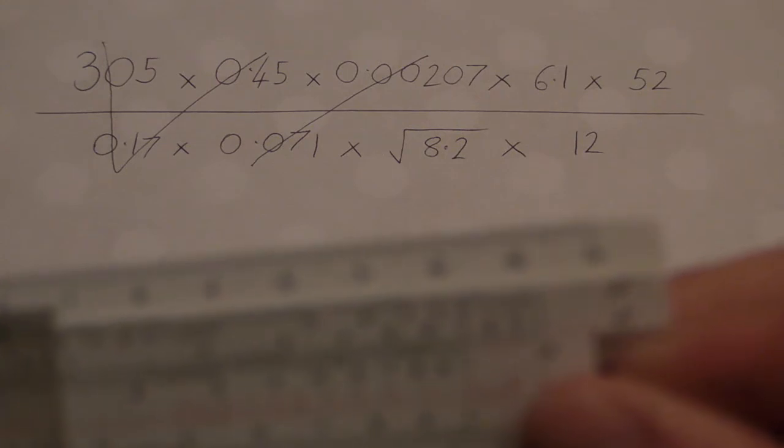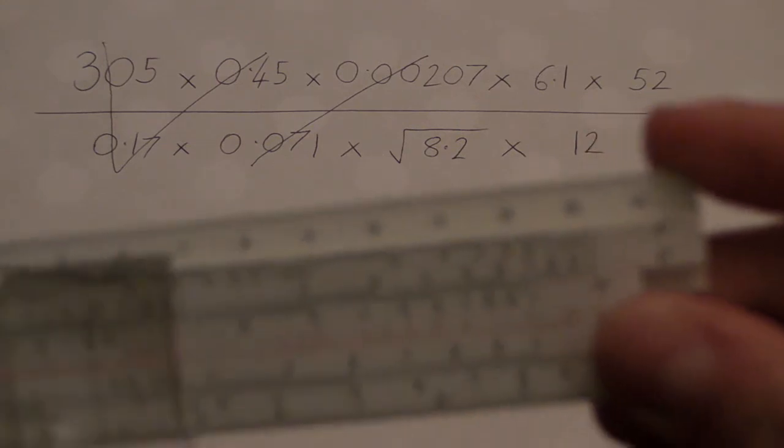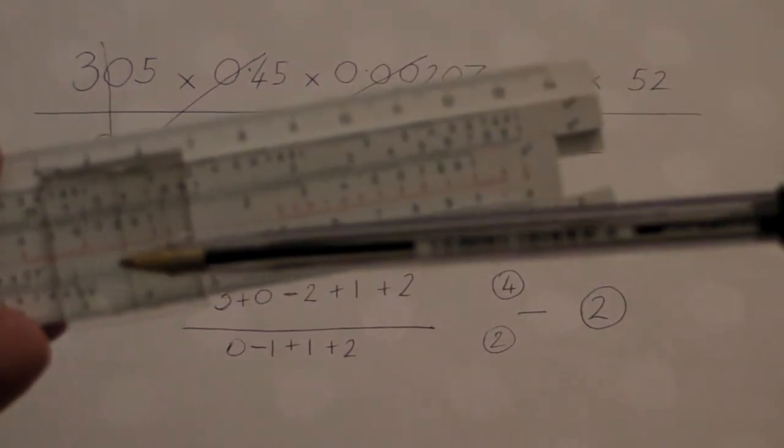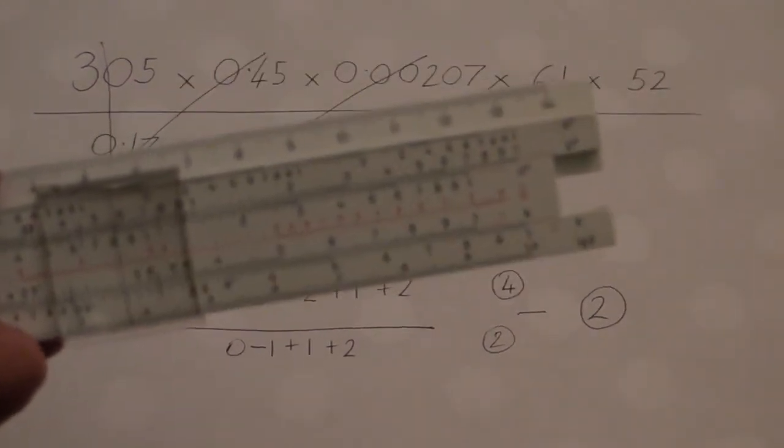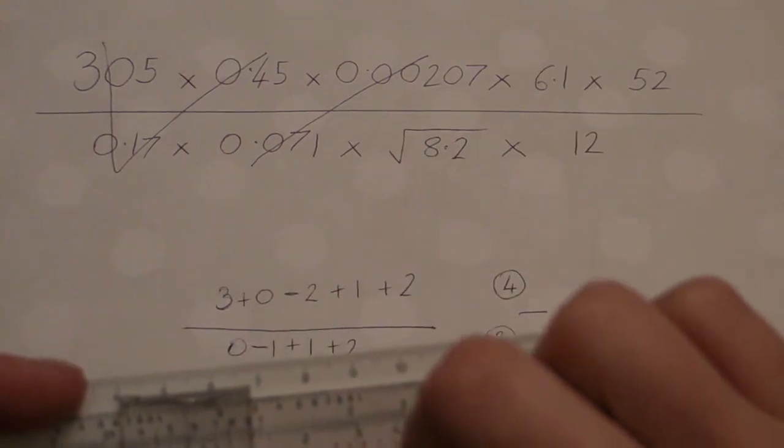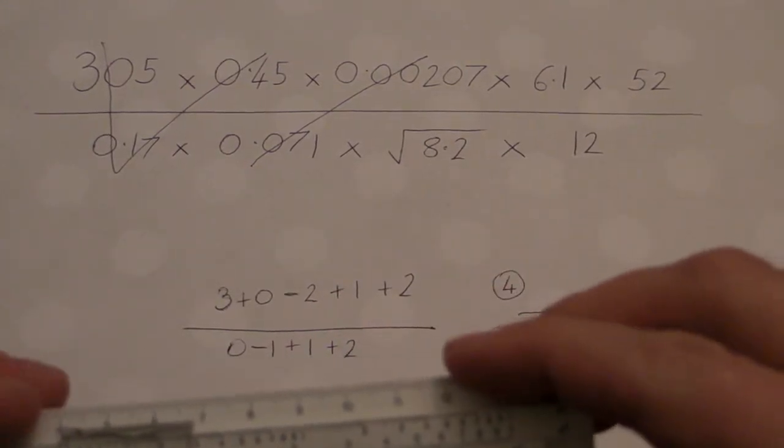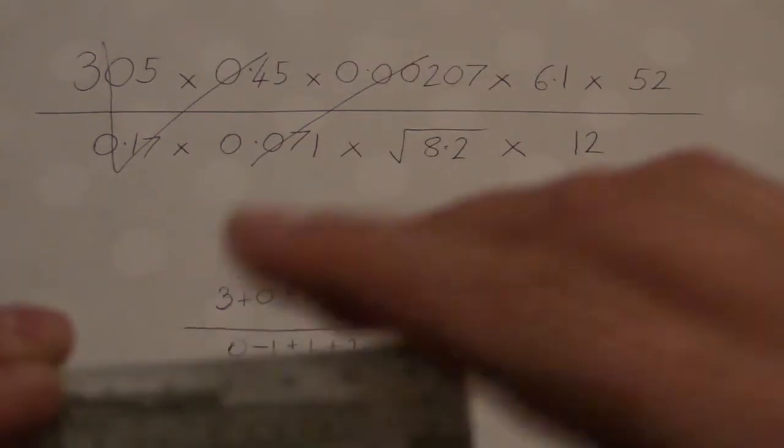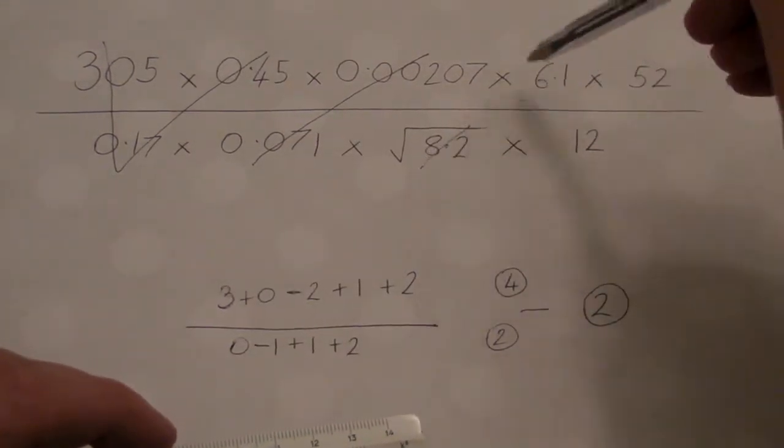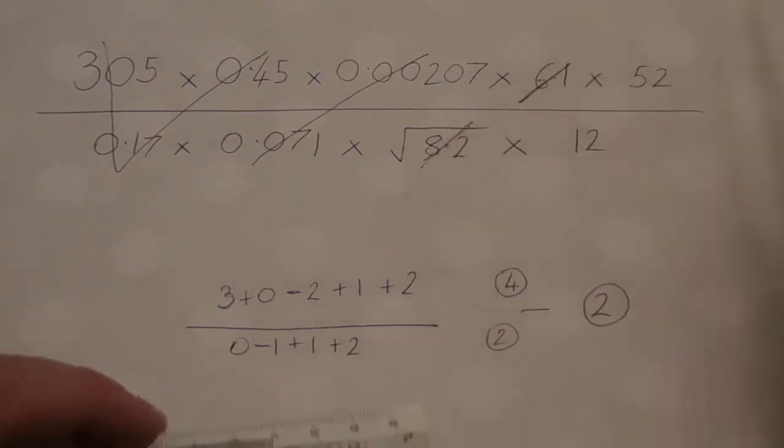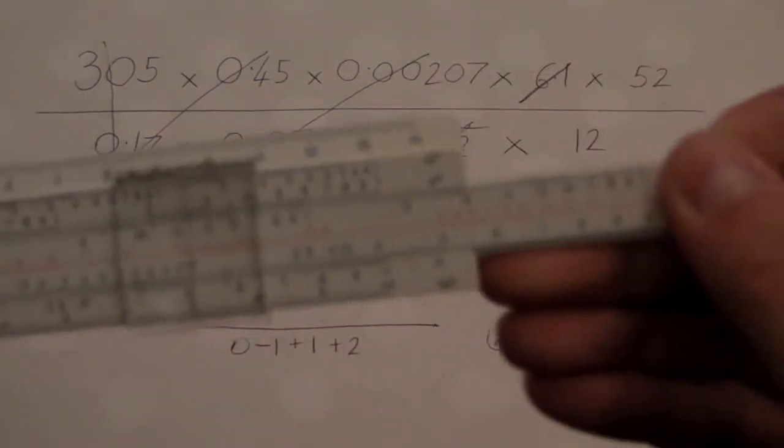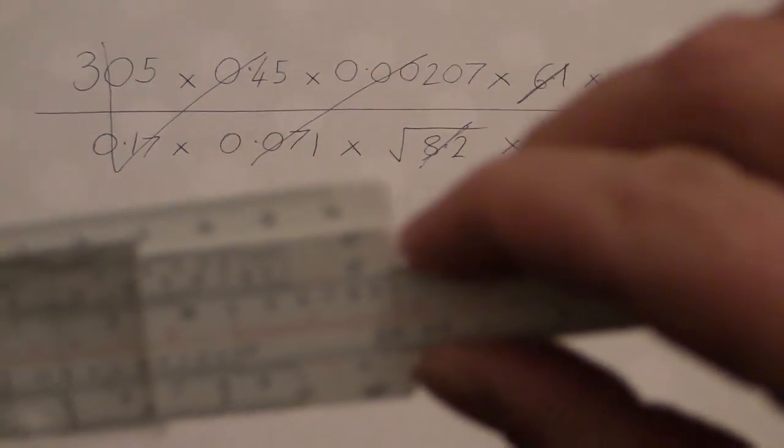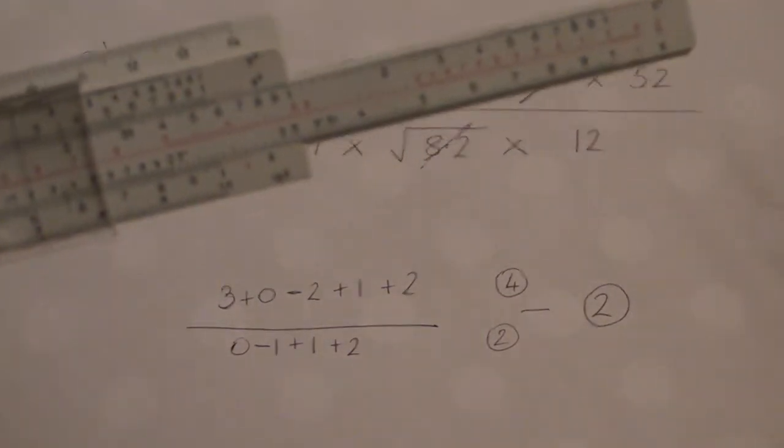Now, remember the B scale shows us the square of what's on the C. So we can use that to find the square root. And we're timesing that by 6.1. We then want to divide that by 12. And times by 52.